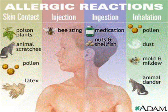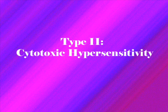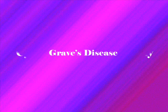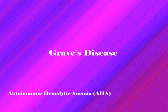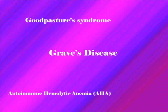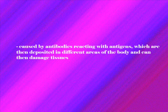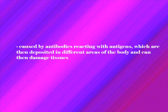The second classification of hypersensitivity disorders is type 2 or cytotoxic hypersensitivity. Type 2 hypersensitivity disorders occur when antibodies attach themselves to tissues or cells and destroy them. Disorders associated with type 2 hypersensitivity include Graves' disease, autoimmune hemolytic anemia, and Goodpasture's syndrome. The third type of hypersensitivity disorder is type 3 or immune complex hypersensitivity. It is caused by antibodies reacting with antigens, which are then deposited in different areas of the body and can damage tissues. Reactions can take up to 3 to 10 hours after the initial antigen reaction.